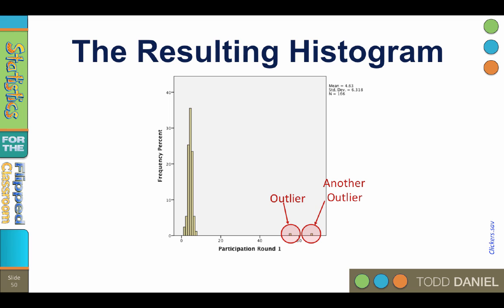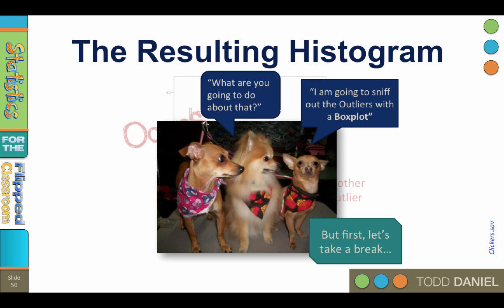As the great philosopher Rick Perry once said: oops! This histogram does not look like what we expected to see. These values are supposed to be between 1 and 7, so something has really gone wrong and we're going to need to do something about that. We're going to sniff out those outliers with a box plot. We'll see you next time.